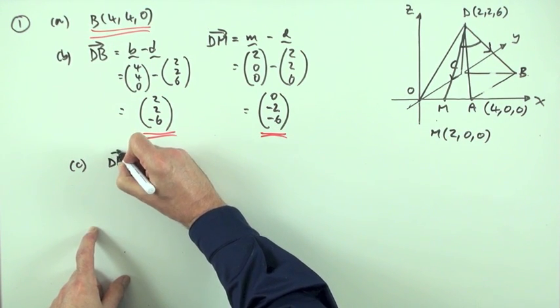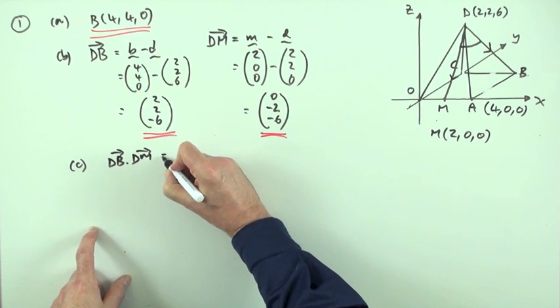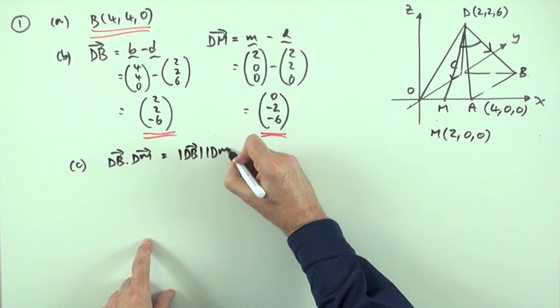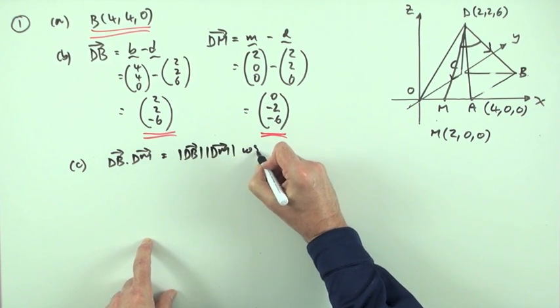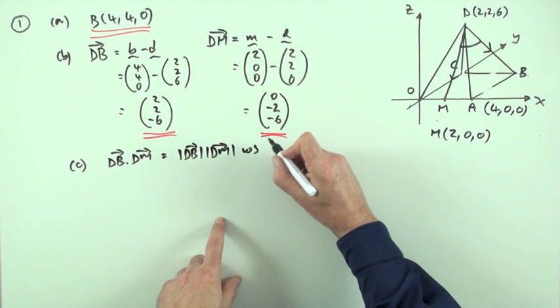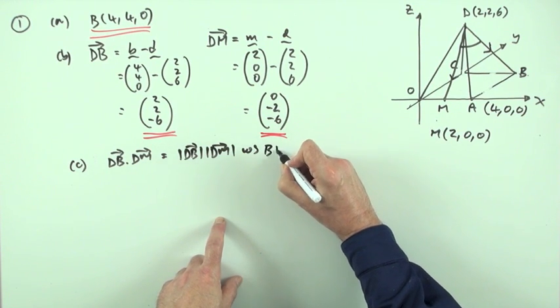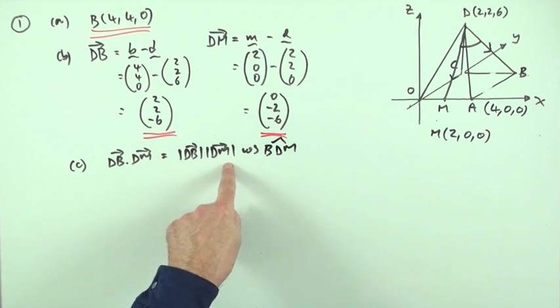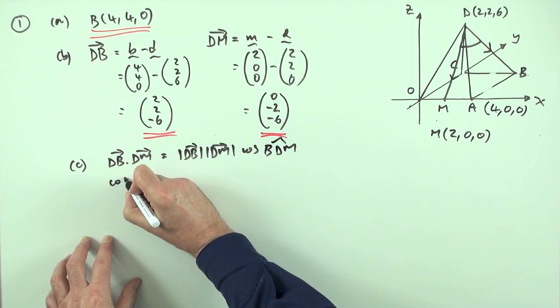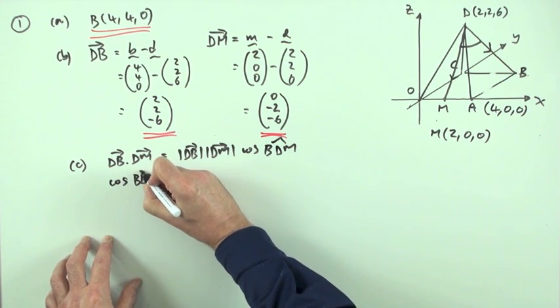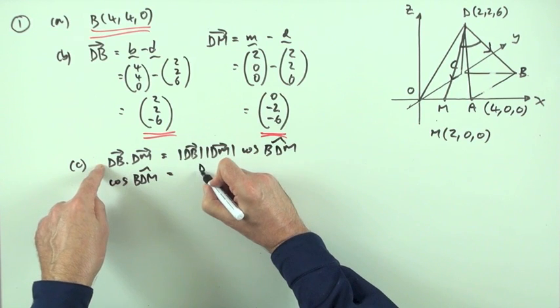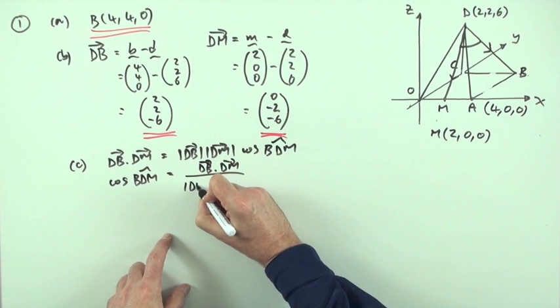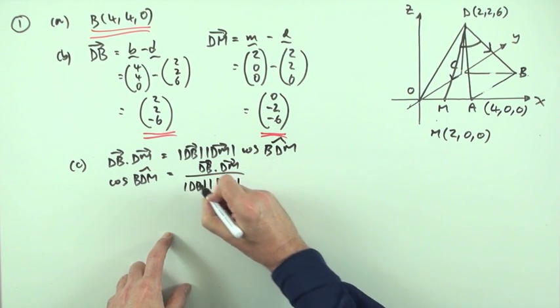So in this case then, you've got the scalar product, DB dot DM is equal to the length of DB times the length of DM times the cosine of the angle in between, which is the angle that it's asking for, BDM. Then since I know those parts, I can isolate that.